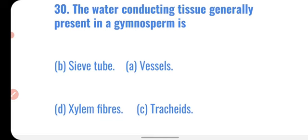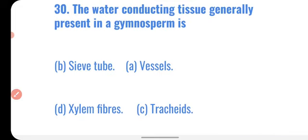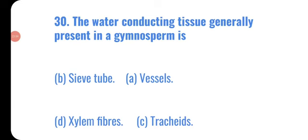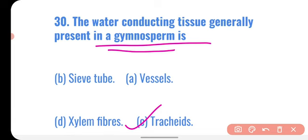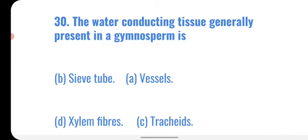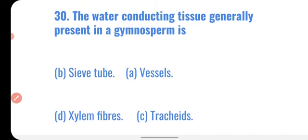The last question: the water conducting tissue generally present in gymnosperms is — tracheids. Tracheids are the main water conducting tissue present in gymnosperm plants. Gymnosperms are plants with naked seeds not covered inside a fruit, like the Christmas tree.